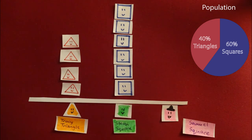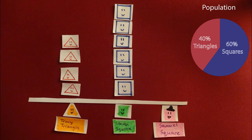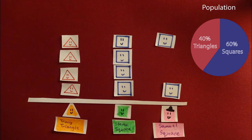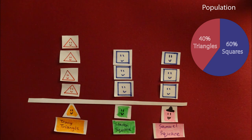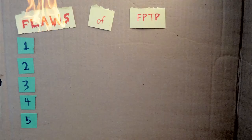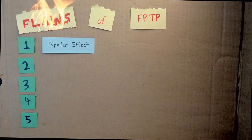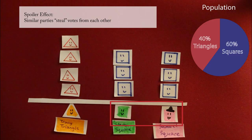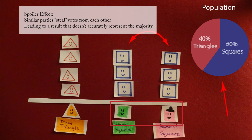Now, suppose Samuel Square joins the race. Some squares are attracted to his fancy hat and switch their votes for him. Now Tracy Triangle has the most votes, despite representing a lower percentage of the population. This is the first major flaw of First Past the Post, called the spoiler effect — when multiple similar candidates steal votes from each other, leading to the majority of the population unhappy.